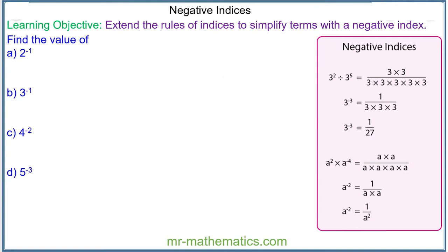Hello and welcome to our lesson on negative indices. We're going to simplify expressions written with a negative power. To do this we need to consider the division rule of indices, where we have x to the 3 divided by x to the 5. The division rule tells us we subtract the powers because the bases are the same, so x to the 3 divided by x to the 5 simplifies to make x to the negative 2.